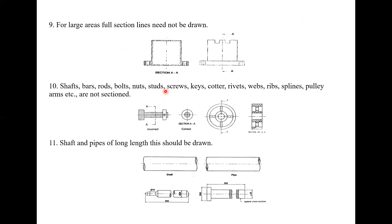If you look at this object, you will see a section. Why? Because of the interior part of the object. But components like shafts are solid — they have no interior cavity — so that is the reason they are not sectioned. Shafts and pipes of long length should be drawn with a break line.